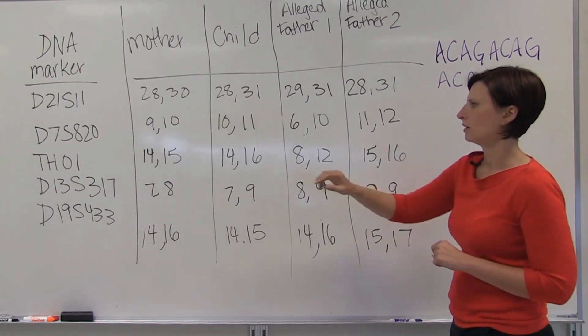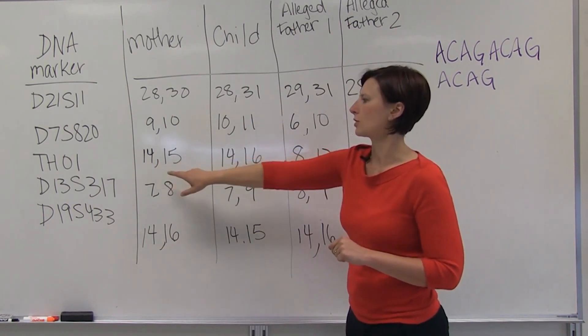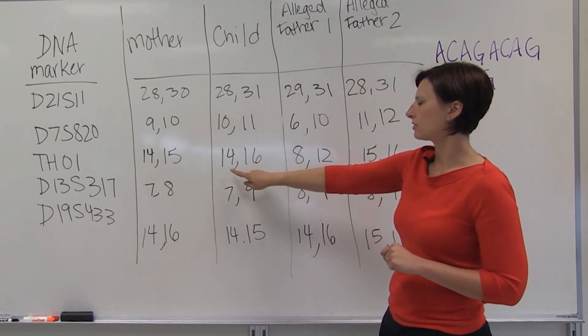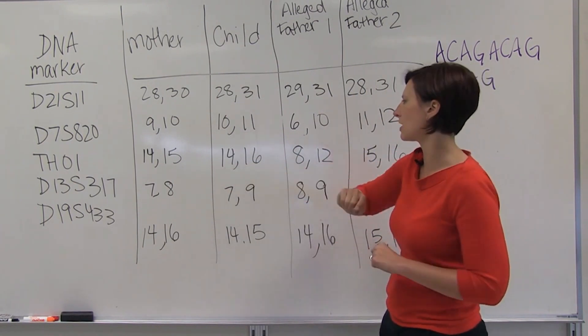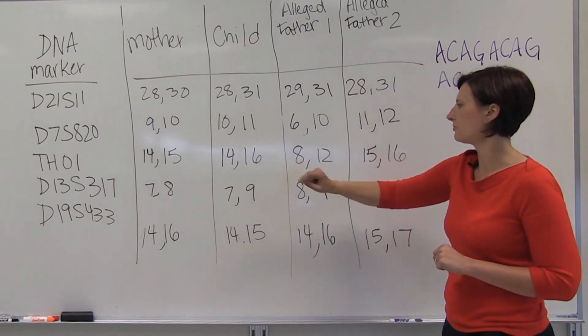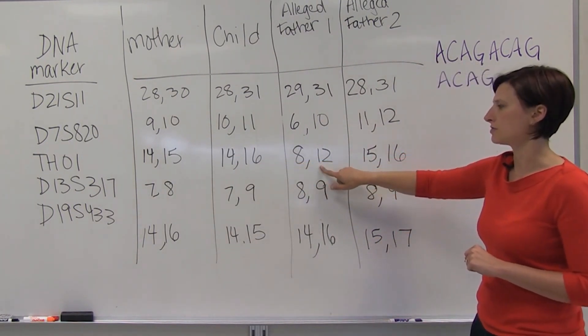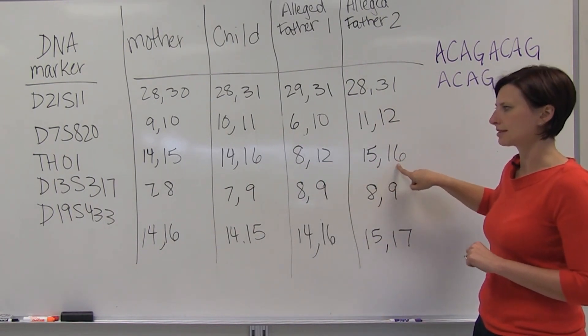When we look at this third locus, mother is 14, 15, the child is 14, 16, so the child had to have gotten its 14 allele from its mother, and so we're looking to find out where the 16 allele could have come from. Again, alleged father 1 is ruled out, but alleged father 2 does have a 16 allele and could have contributed that.